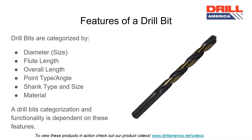Features of a Drill Bit: Drill bits are categorized by many different features. They include the size, also called the diameter, the flute length, also called the cutting length, the overall length, the point type and the point angle, the shank type and shank size, and the material the drill bit was made of.